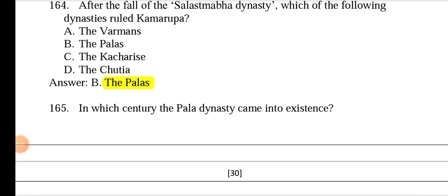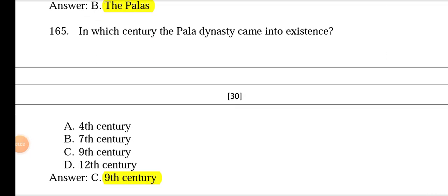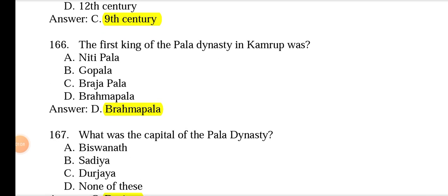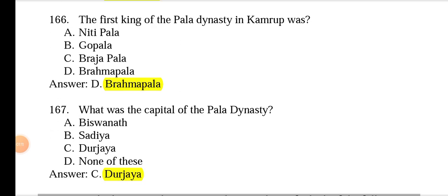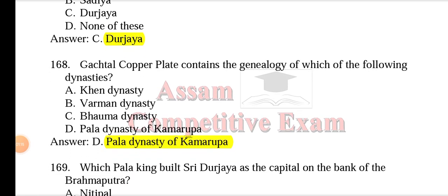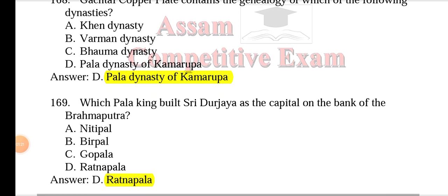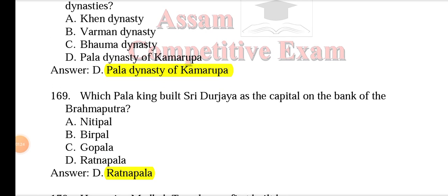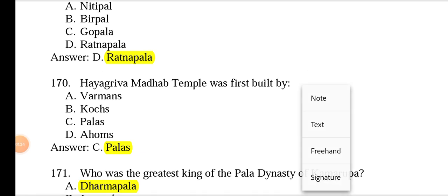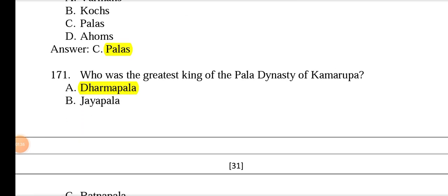The Pala dynasty came into existence in the ninth century. The first king of the Pala dynasty in Kamarupa was Brahma Pala. The capital of the Pala dynasty was Durjaya. The Gachetal copper plate contains the genealogy of the Pala dynasty of Kamarupa. The Pala king who built Sri Durjaya as the capital on the bank of the Brahmaputra was Ratnabala. The Hayagriva Mandap Madhav temple was first built by the Palas.